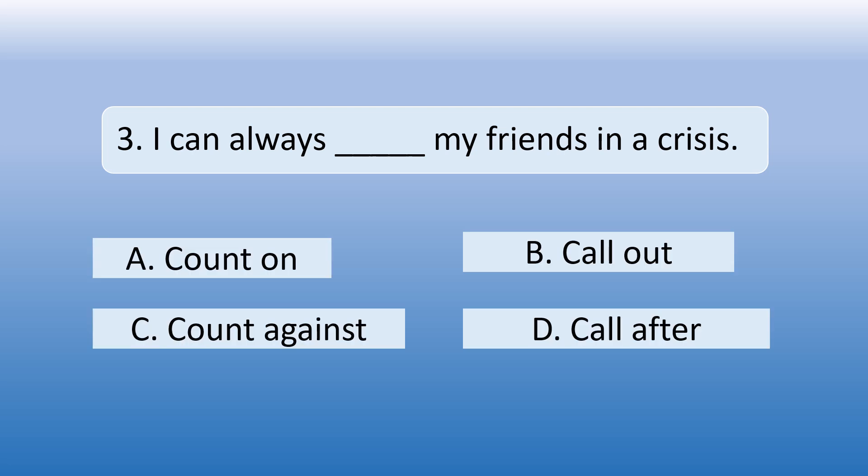Options are, Option A: Count on, Option B: Call out, Option C: Count against, Option D: Call after.